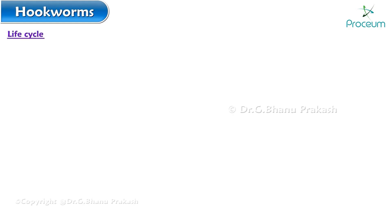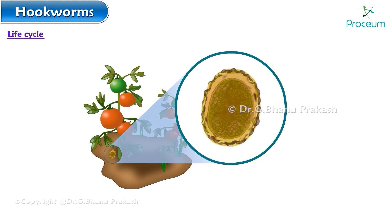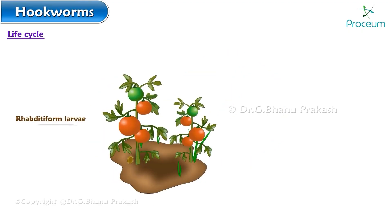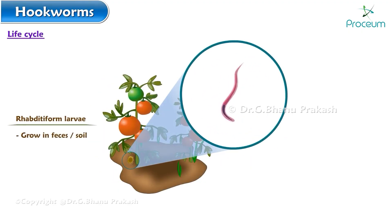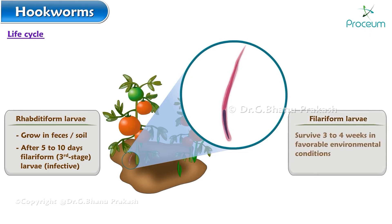The life cycle of intestinal hookworm: Eggs are passed in the stool, and under favorable conditions, larvae hatch in one to two days and become free-living in contaminated soil. These released filariform larvae grow in the feces and/or the soil, and after five to ten days and two molts, they become filariform larvae. These infective larvae can survive three to four weeks in favorable environmental conditions.